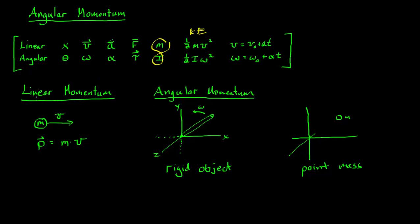To review linear momentum: if we have a mass moving in linear motion at some velocity, we define the momentum P to be the product of the mass and the velocity. Now for angular momentum — looking at a rigid object, here's a rod rotating in the XY plane about the Z axis. Instead of P, we're going to use L.